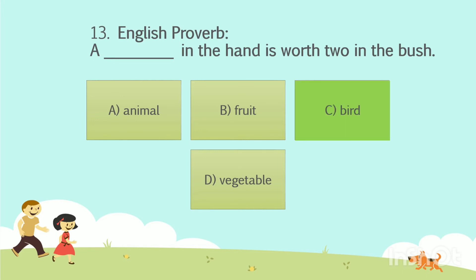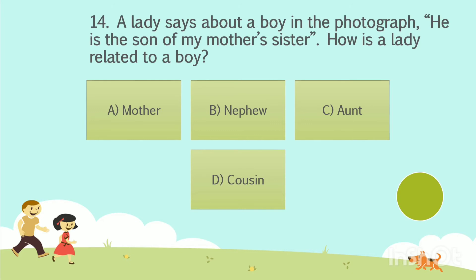Let's go to the next question. A lady says about a boy in the photograph: He is the son of my mother's sister. How is the lady related to the boy? Option A: Mother. Option B: Nephew. Option C: Aunt. Option D: Cousin. Your time starts now. The answer is Option D: Cousin.